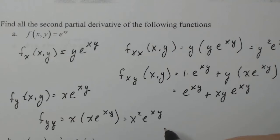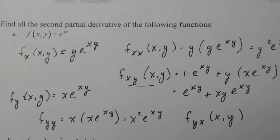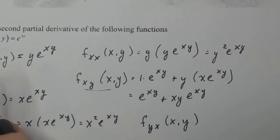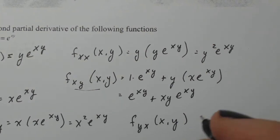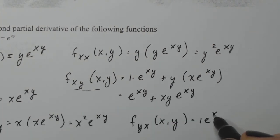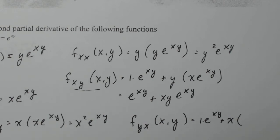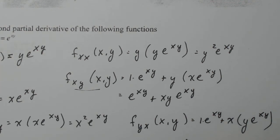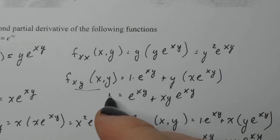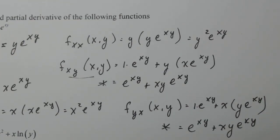Now I know that f sub yx should be the same as f sub xy — but let's verify that. I take the derivative of x e to the xy with respect to x. Since x appears in both factors, I use the product rule: the derivative of the first times the second, plus the first times the derivative of the second with respect to x, which gives y. So I get e to the xy plus xy e to the xy. You can see that this and f sub xy are exactly the same, just as predicted. It's something you can utilize or something you can show that they're the same.